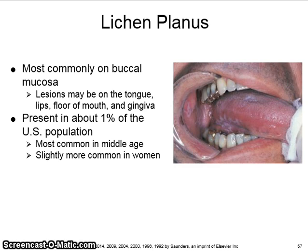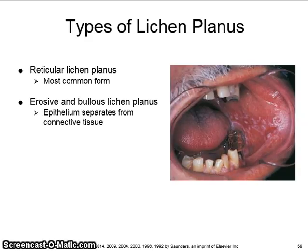Lichen planus is present in about one percent of the U.S. population, most common in middle age and slightly more common in women. Types include reticular lichen planus, which is the most common form, and erosive and bullous lichen planus, where the epithelium separates from the connective tissue.